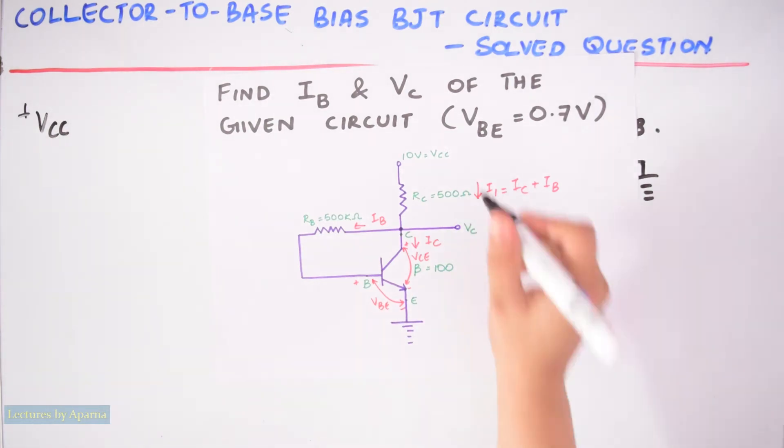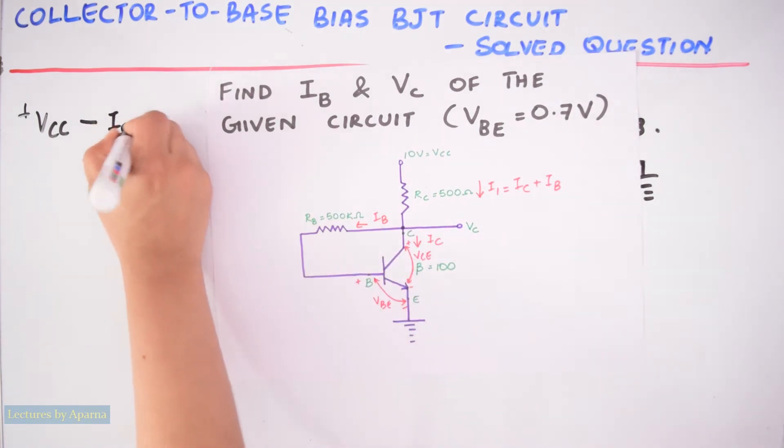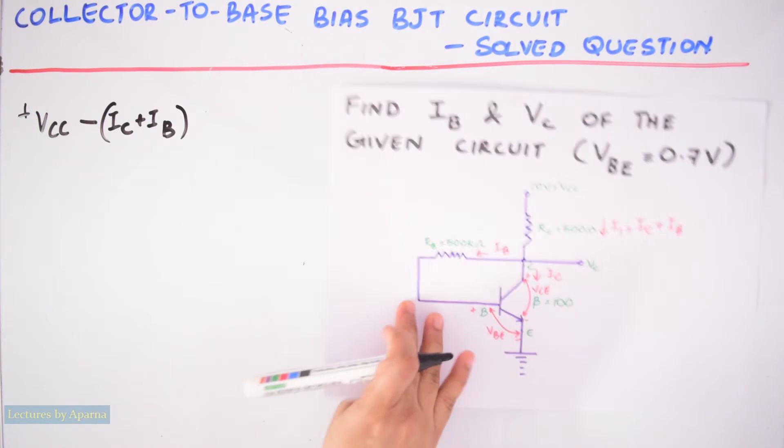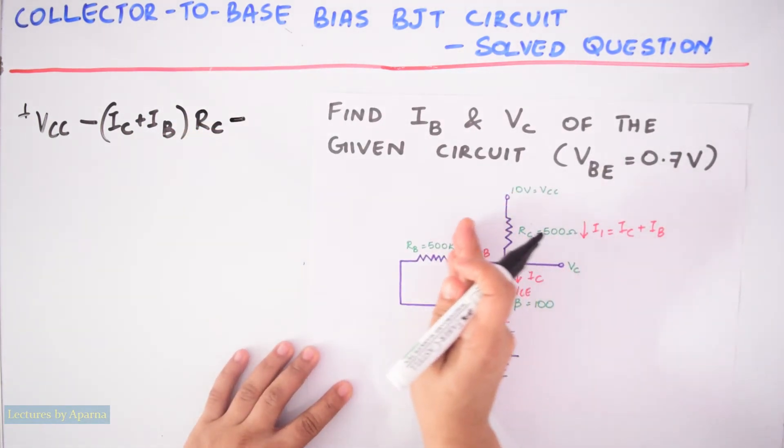So I can write minus current through this RC, which is IC plus IB into RC. I am considering the input section, so I have to come here.